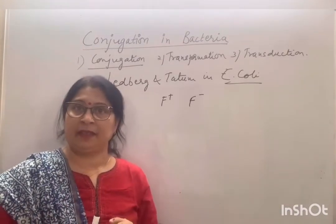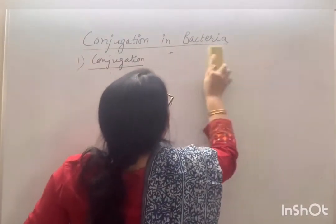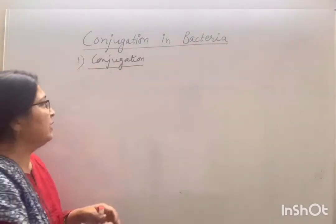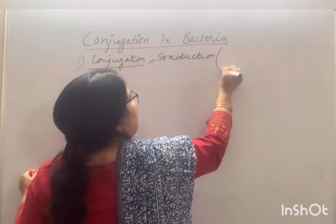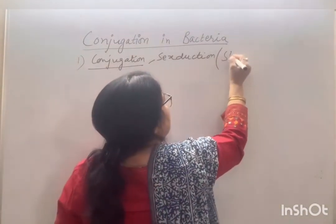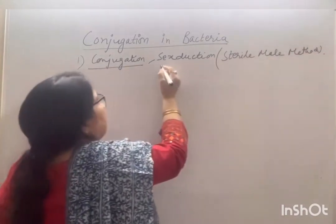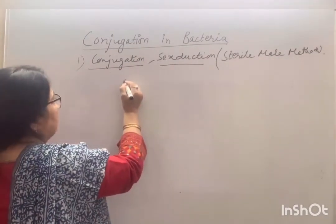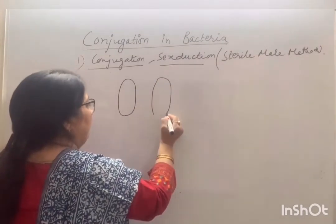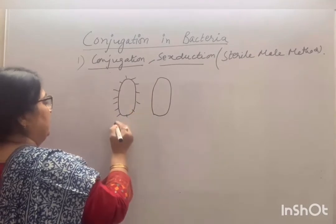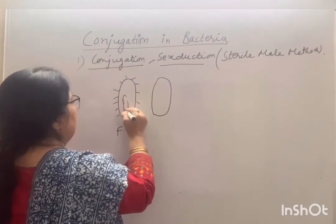There are two methods by which genetic material is transferred through the conjugating tube. The first is sexduction, also known as the sterile male method. In this, we have a bacterial cell that is F-plus — meaning the fertility factor is present — along with the bacterial chromosome.